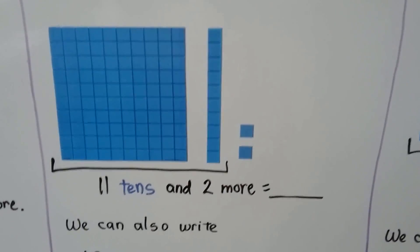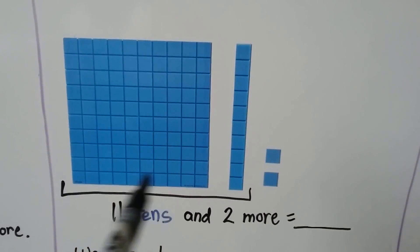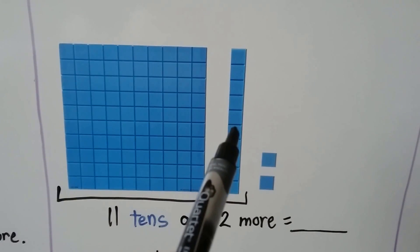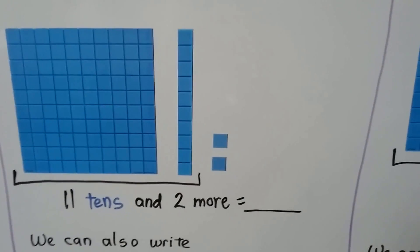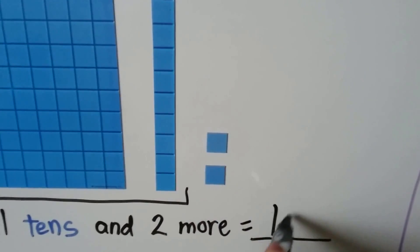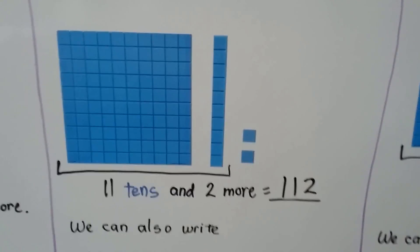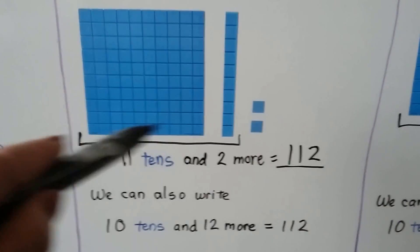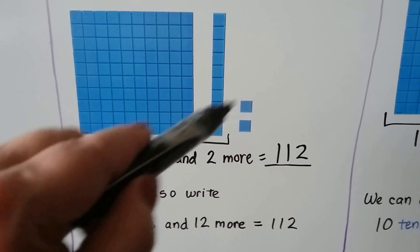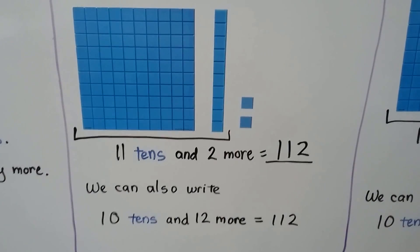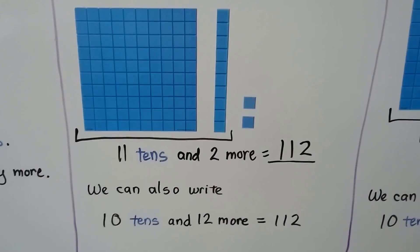Here we have 11 tens and two more. We have 100 from 10 tens. We have 10 more. So that's 110, 111, 112. We have 11 tens and two more. That is equal to 112. We can also write 10 tens and 12 more. We have 10, 11, 12, and a 100. It's still 112 — just a different way to count them.